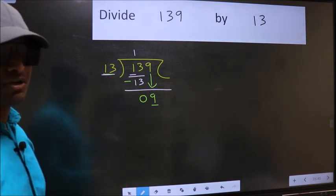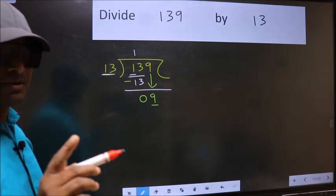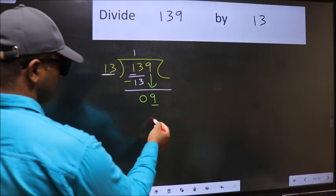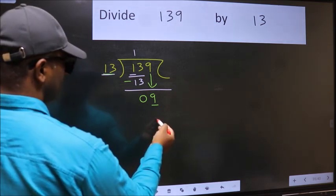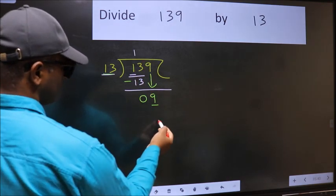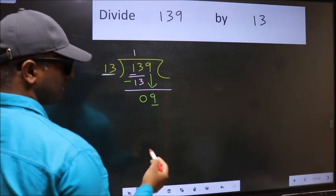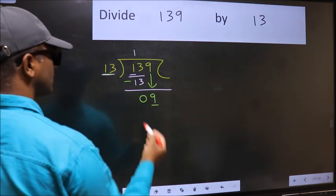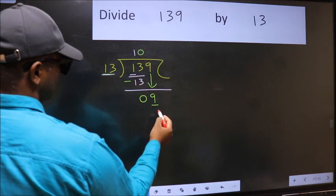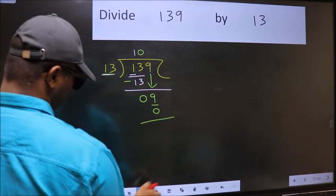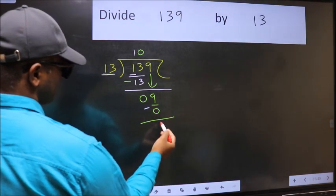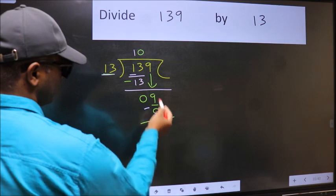Instead, what you should think of doing is: which number should we take here? If I take 1, we will get 13, but 13 is larger than 9. So what we should do is we should take 0. So 13 into 0 is 0. Now we should subtract 9 minus 0, which equals 9. Over here we did not bring any number down, and 9 is smaller than 13.